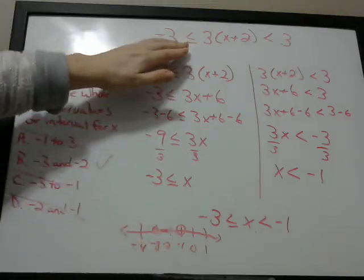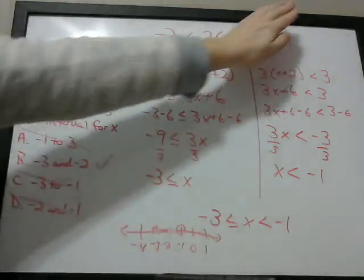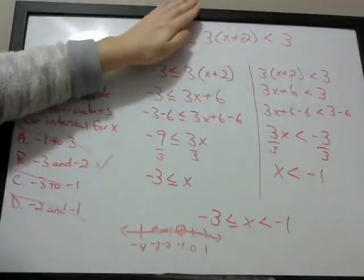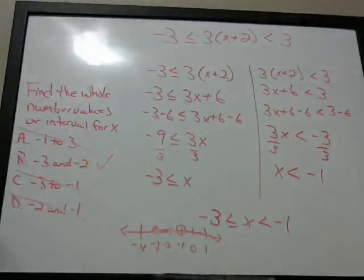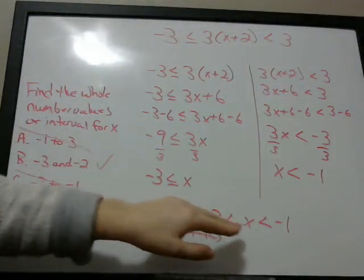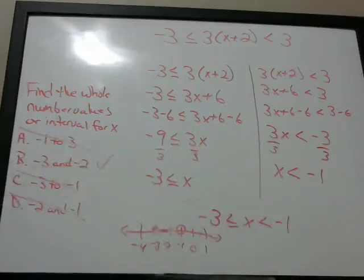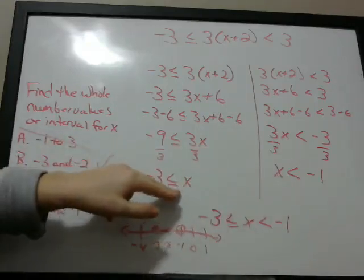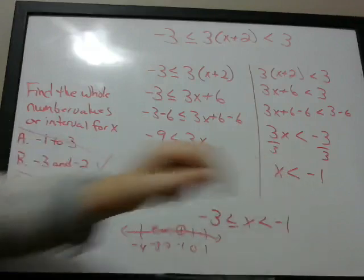So when you see a problem like this, you basically break it up into two parts, solve for x like you would any other algebra problem, but you have to put them together at the end because it's like an and statement — it has to satisfy this side and it has to satisfy that side.